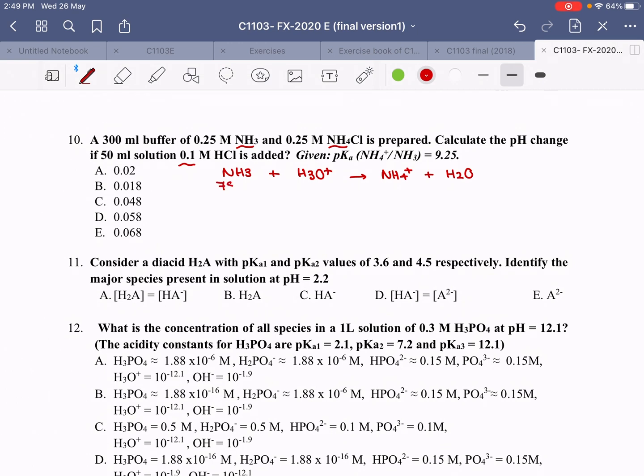That is 75 ml. 0.1 times 50, that is 5 ml. 0.25 times 300, 75 ml.